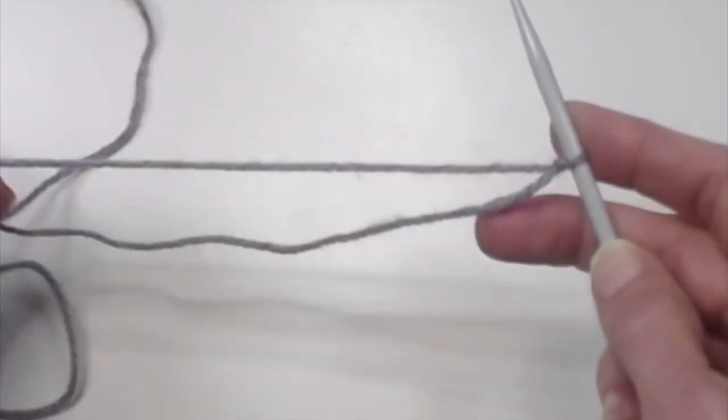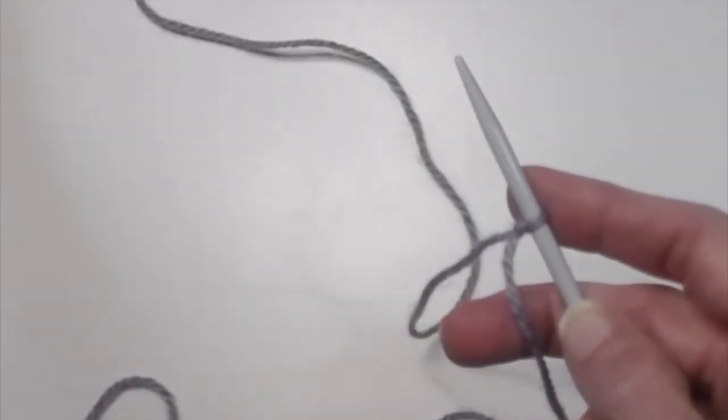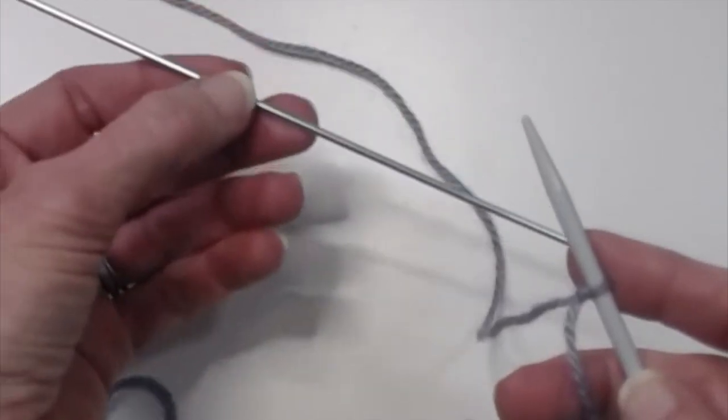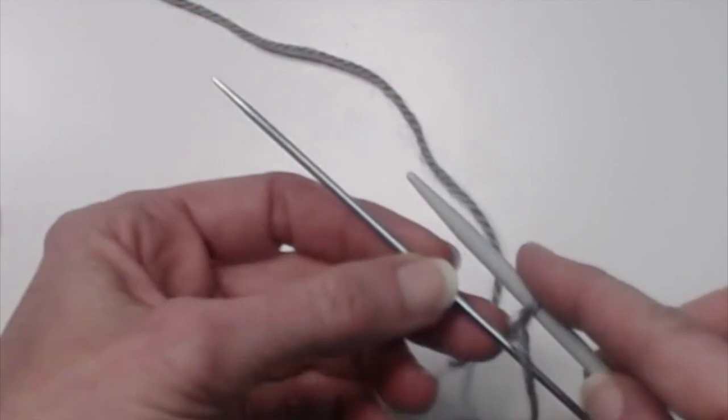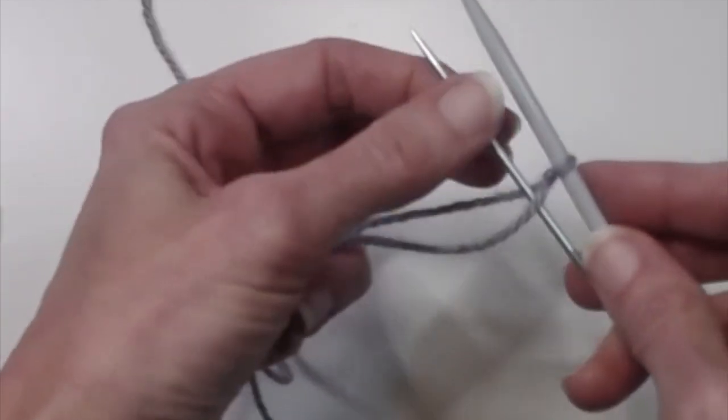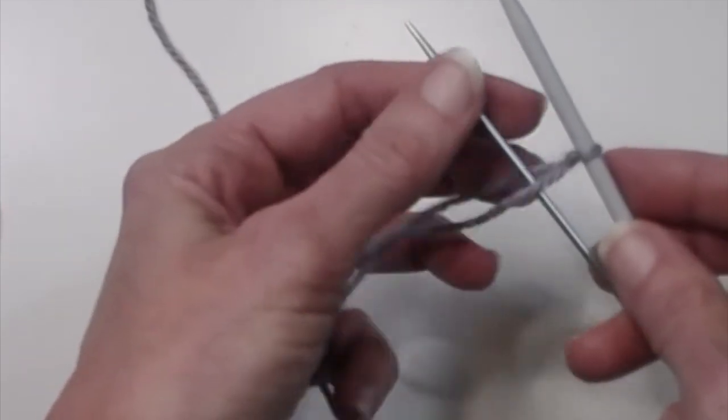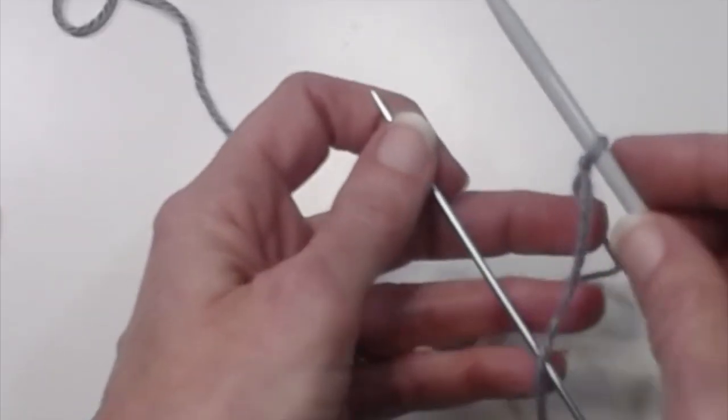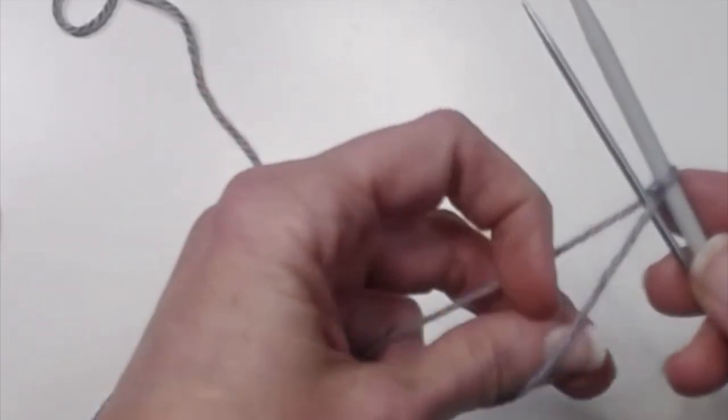So the small variation we're going to put on it is that that loop of yarn around my thumb is going to go around a DPN to create extra space. I'm going to use a US 1 DPN. The larger the needle, the more elastic the cast-on. Now notice I'm not putting a slip knot around the DPN. I'm simply holding it underneath the needle, and it's going between those two pieces of yarn.